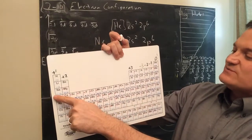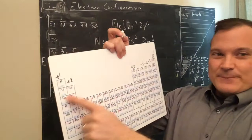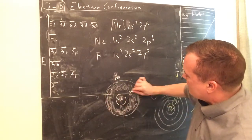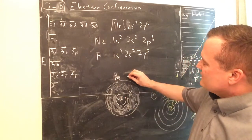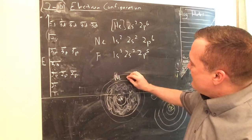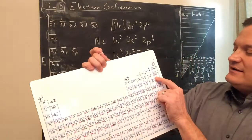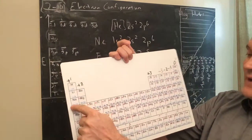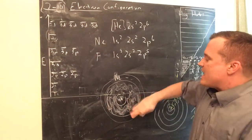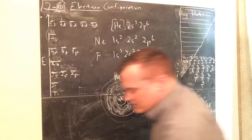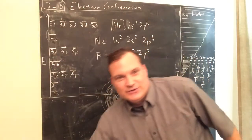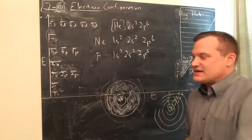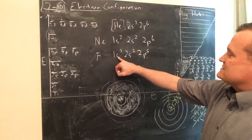The problem is neon doesn't have a nucleus strong enough to hold that extra electron there. Sodium would — which is why we move up to the next element. There's a balance between nuclear charge and electrons, and when the shells are full, there's an ideal relationship. This is more important for AP students, but everyone will see it again in later lessons.